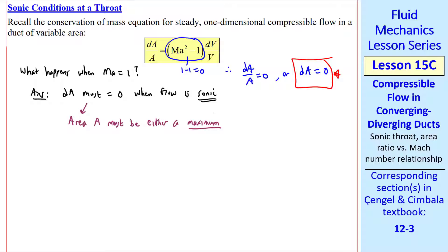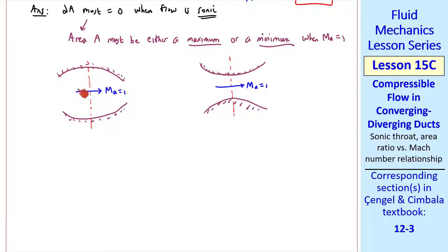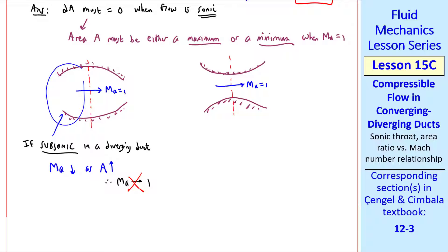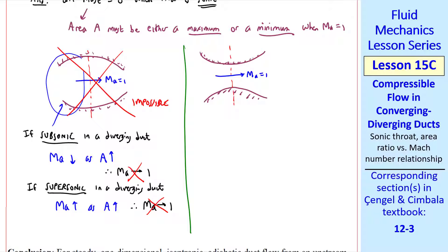So area A must be either a maximum or a minimum when Mach number is 1. I sketched these two possibilities here, where the flow is from left to right. Let's examine whether it's possible to have Mach number 1 when the area is a maximum and when the area is a minimum. In both cases we'll consider the left side of the flow. If the flow is subsonic in this diverging portion of the duct, we know that Mach number goes down as area goes up — it's a subsonic diffuser — so Mach number cannot approach 1. If the flow is supersonic in this diverging duct, Mach number goes up as area goes up; it's a supersonic nozzle, so again Mach number cannot approach 1. So this case is impossible.